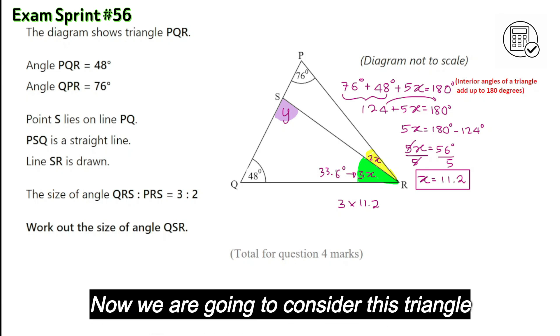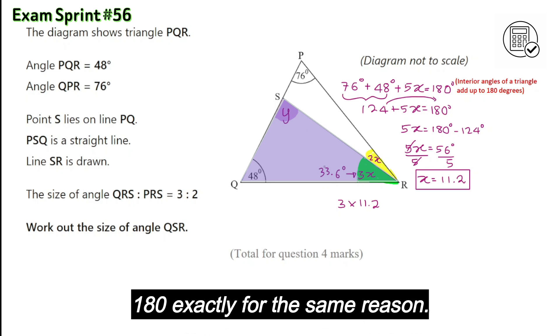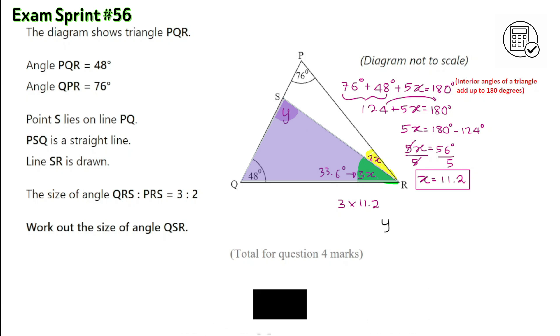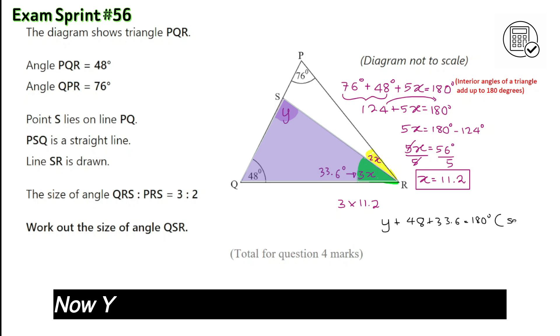We are going to consider this triangle and all the interior angles again add up to 180, exactly for the same reason. So we can write Y add 48 add 33.6 is 180 degrees. Same reason as above.